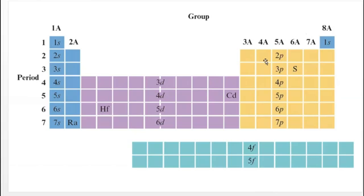This relates to the quantum numbers. L is the quantum number that determines the subshell: if you are in the s subshell, l equals 0; in the p subshell, l equals 1; in the d subshell, l equals 2; and in the f subshell, l equals 3.